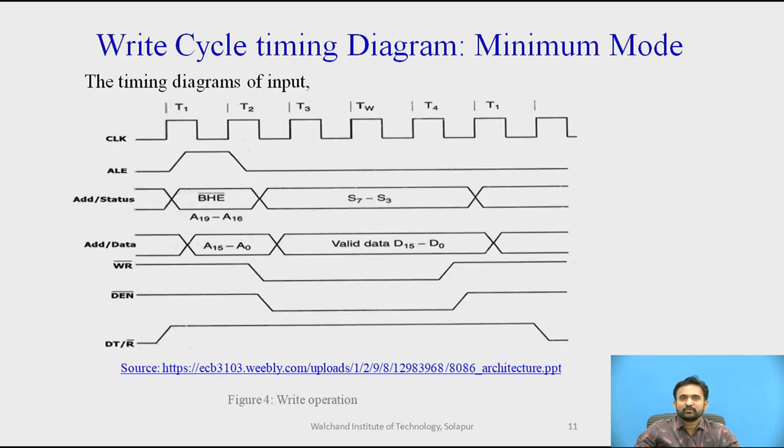Now we are coming to the part of write cycle timing diagram in the minimum mode. The simplified timing diagram for the memory or I/O write cycle, which requires one wait state in the minimum mode, is shown here in this figure.